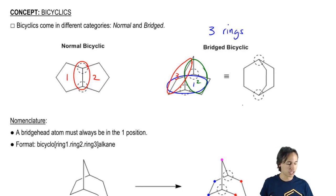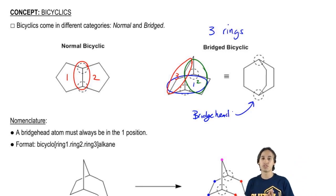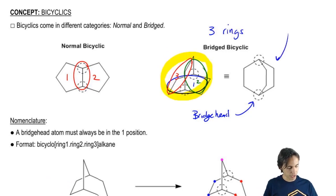Remember that the bridgehead atoms are simply these right here. So we called that the bridgehead. Now it can be difficult to visualize this, but it turns out that both of these structures, both the 3D one that I drew here and this one over here are both the same thing. They're just two different ways to represent the same molecule.